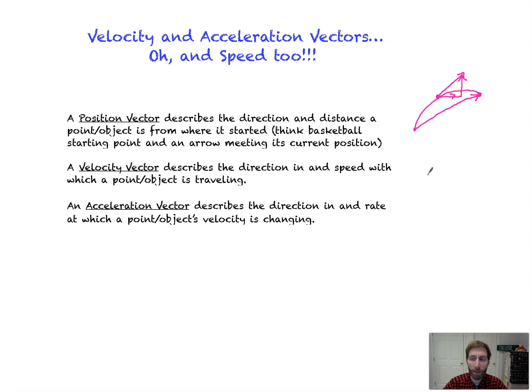And then an acceleration vector describes the direction and rate at which the velocity is changing. So when you're talking about something that's shot up in the air, there's really only one acceleration vector. It's gravity pulling down unless there's wind pushing against it or pushing in the direction of motion. But either way, they're not that bad. They're really easy to find.